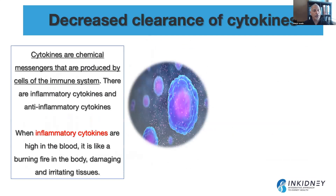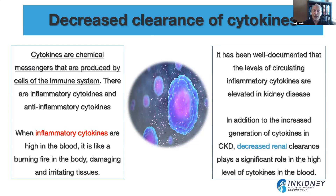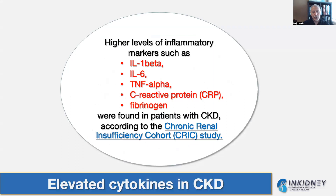Another aspect unique to chronic kidney disease is decreased clearance of cytokines — the chemical messengers produced by immune cells. There are inflammatory and anti-inflammatory cytokines; when inflammatory cytokines are elevated, it is like a burning fire damaging tissue throughout the body. In CKD, not only is there increased generation of inflammatory cytokines, but there is also decreased renal clearance because the kidney cannot eliminate them efficiently. The CRIC study, one of the largest CKD studies, showed that inflammatory markers including IL-1-beta, IL-6, TNF-alpha, CRP, and fibrinogen are elevated in patients with chronic kidney disease.